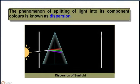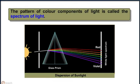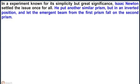The phenomenon of splitting of light into its component colours is known as dispersion. The pattern of colour components of light is called the spectrum of light.